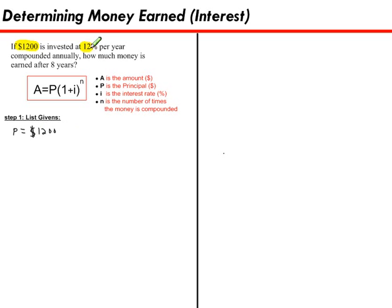The next value is this 12% and that's how fast the money grows which is the I, interest rate. So I'll list I as 12%.